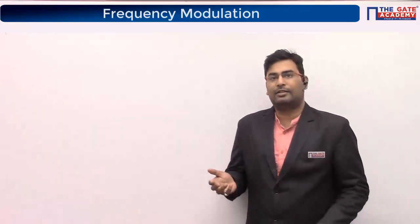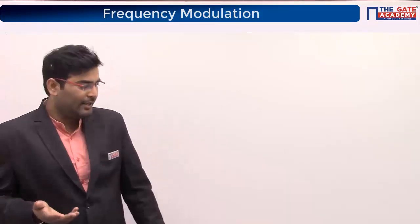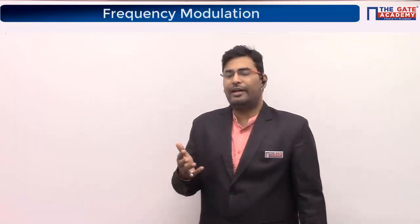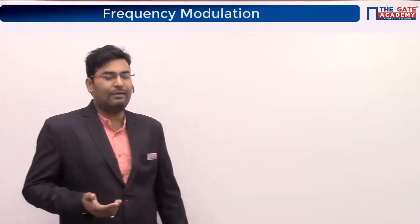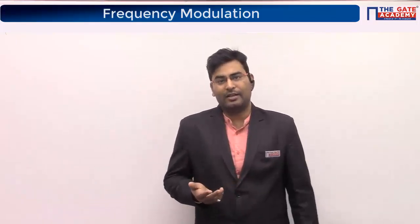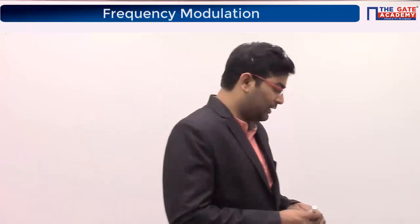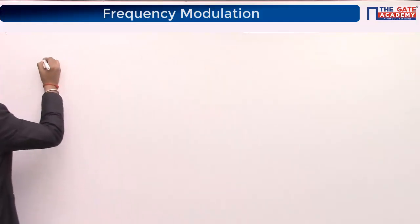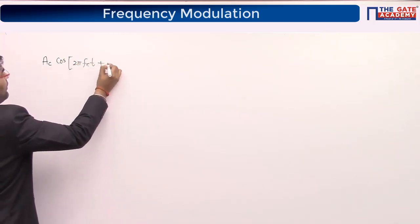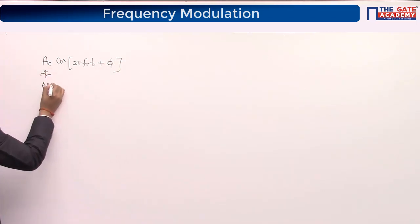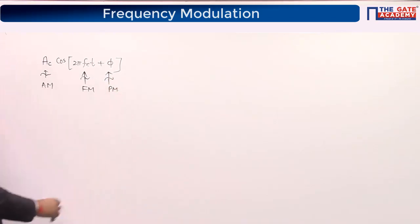We have already modulated the amplitude Ac in amplitude modulation — it became Ac(1 + Km(t)). Now it's time to look at frequency and phase. The idea is that you will change the frequency of the carrier with respect to the message signal. If you vary the amplitude Ac you get AM, if you vary the frequency you get FM, and if you vary φ you get phase modulation.